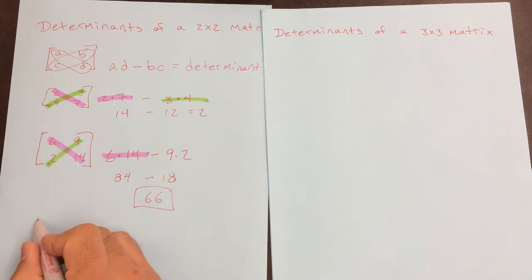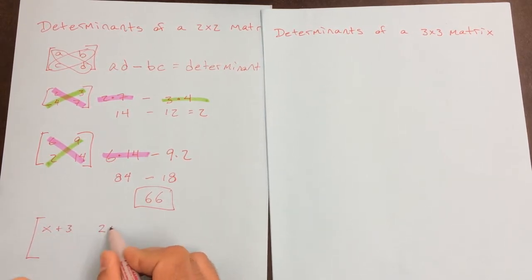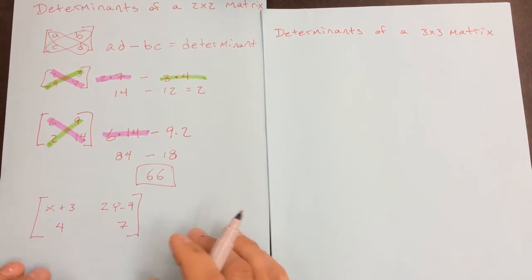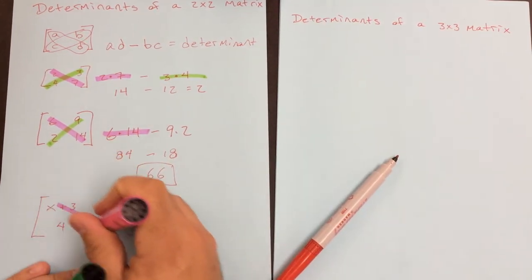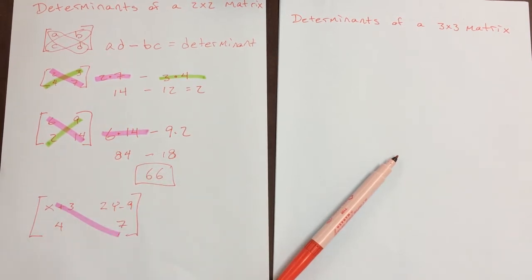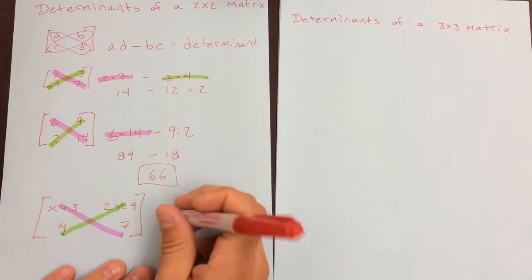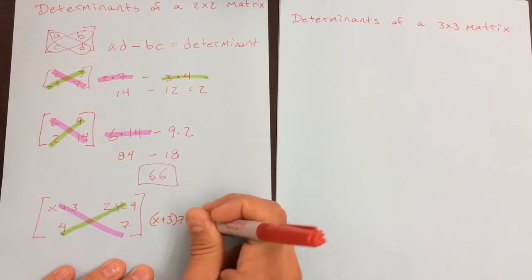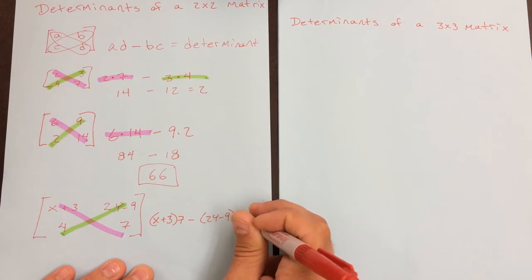Sometimes they'll try to get tricky on you and throw some variables in there. Still just follow the same process. So we're going to do (x + 3) times 7 minus (2y − 9) times 4. I'm going to put each of those in parentheses.